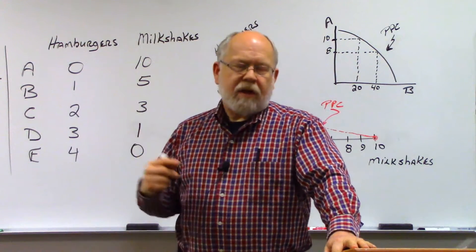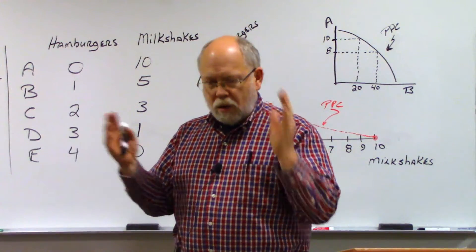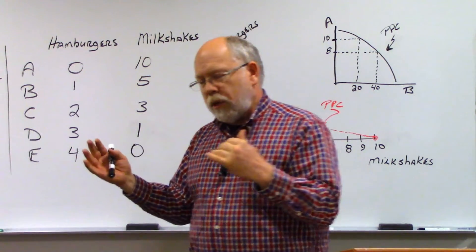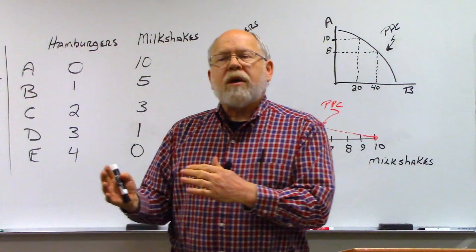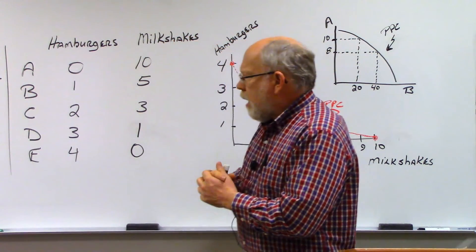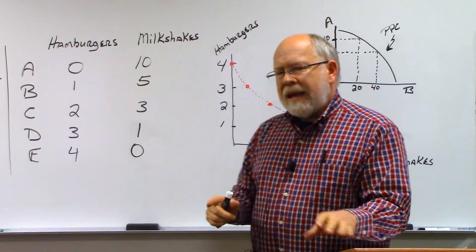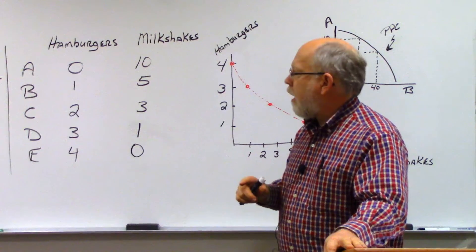We talked about a hypothetical Farmer Jones, and Farmer Jones could produce either wheat or coal. Whether he produced wheat or coal was really determined on maximum productivity of his sons. He wanted to keep his sons busy. But we didn't mention anything about price in that section of the video. We're going to go there today.